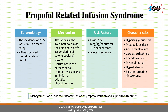Propofol-related infusion syndrome is a rare but known side effect of propofol that occurs when high doses are used for long durations. It occurs due to alterations in mitochondrial metabolism and electron transport chain function, though the exact mechanism of PRIS is still unknown. It is characterized by hypertriglyceridemia, metabolic acidosis, acute renal failure, cardiac arrhythmias, and rhabdomyolysis. PRIS is a diagnosis of exclusion, and management consists of discontinuation of propofol infusion and supportive treatment.